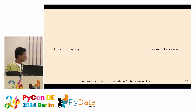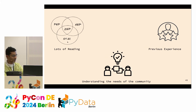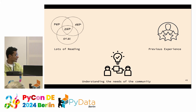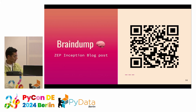How we created the ZEP process: I read a lot of existing processes and how they work, including PEP and NEP — NumPy Enhancement Proposal — and STAC, which is used in the geospatial world. I also had previous experience making processes for community organizations, and that helped a lot. There's a blog post available if you want to deep dive, which is really helpful for how to go through all the stages of making such a process.